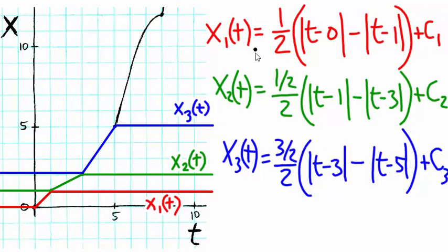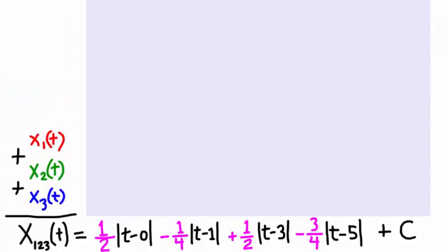If we go ahead and add the three equations and combine like terms, we get this equation that you see displayed here. I'm now calling that intermediate sum x subscript 1, 2, 3.